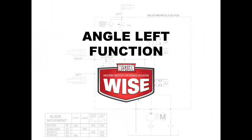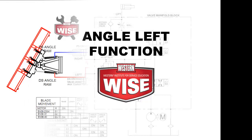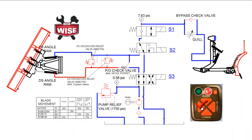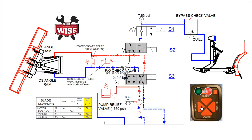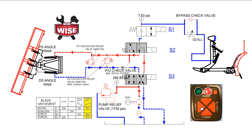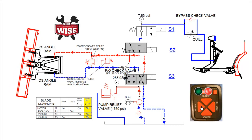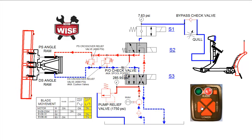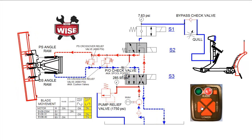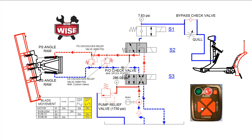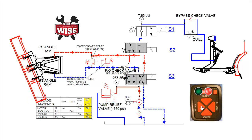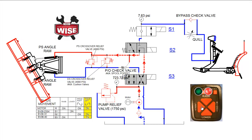We will now demonstrate the angle left function. Pressing the angle left button on the cab control activates the motor and the S2 and S3 cartridge valves. Hydraulic fluid then flows through the shifted S3 valve, through the shifted S2 valve, providing pilot pressure to the PO check valve, and extending the passenger side angle ram. The retracting driver side ram forces returning hydraulic fluid through the PO check valve and the shifted S3 valve, and back to tank. When the blade is fully angled, pressure will build to the pump relief setting and then bypass directly to tank.